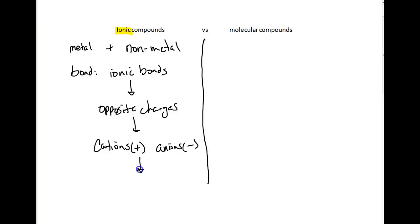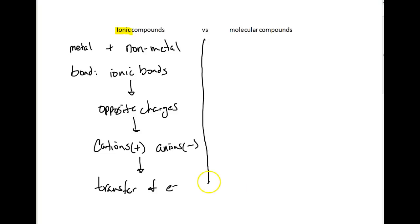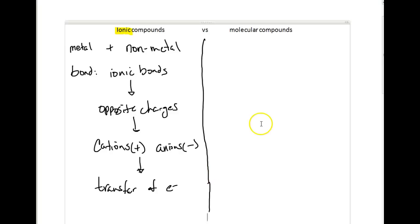We like to also say that this is a transfer of electrons. And the whole reason behind the transfer of electrons is, as we talked about before, to try to have an electron configuration like a noble gas.